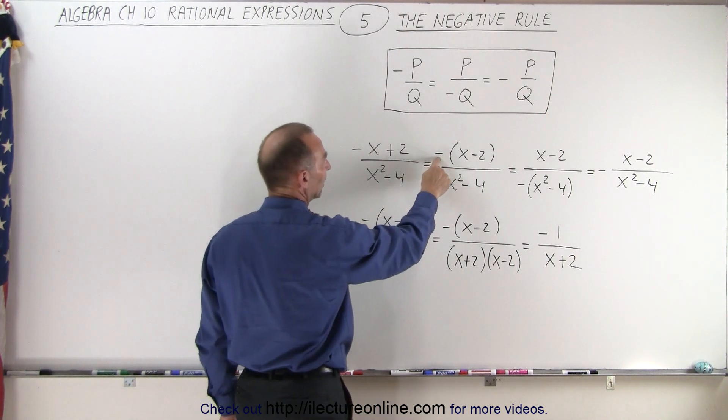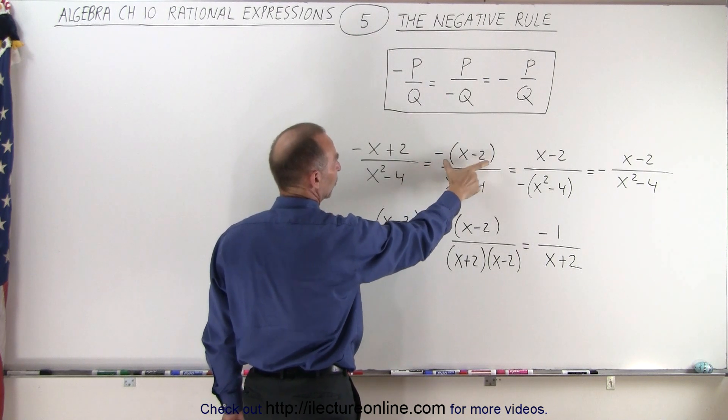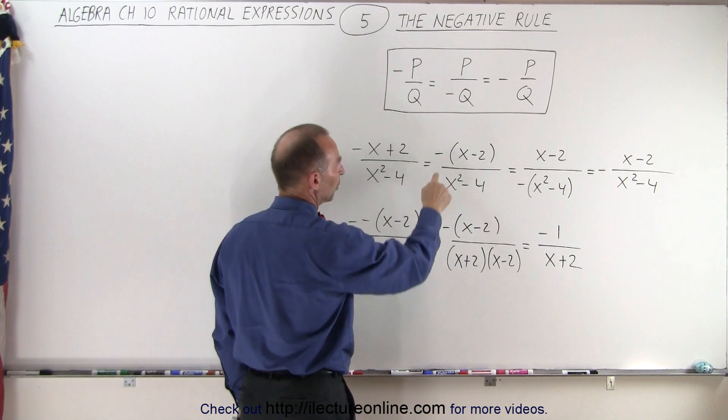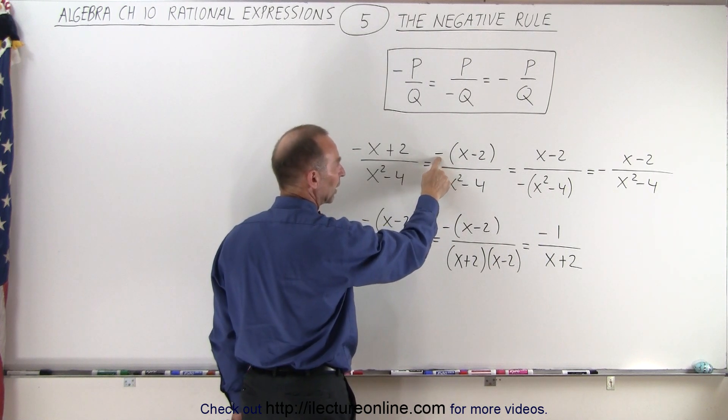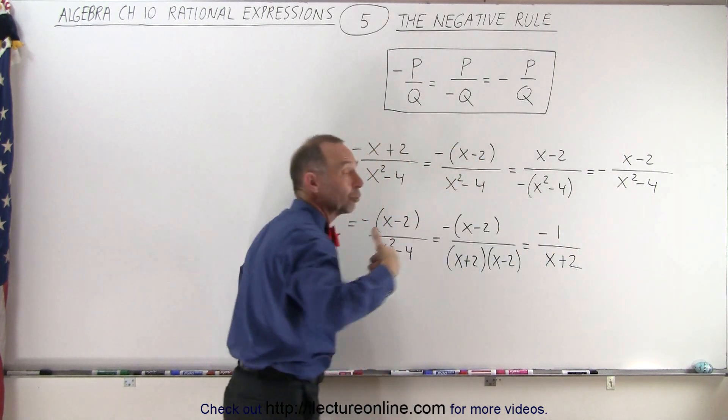we can first factor out a negative sign. That's like factor out negative 1, right? Negative times the quantity x minus 2. And then we can put the negative sign in front of the numerator, in front of the denominator, or in front of the divisor. It doesn't really matter.